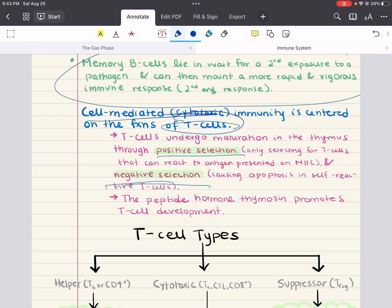Negative selection refers to causing apoptosis in cells that are self-reactive, meaning they're activated by proteins produced by the organism itself. The maturation of T cells is facilitated by thymosin, a peptide hormone secreted by thymic cells. Once T cells leave the thymus, they are mature but naive. Upon exposure to antigen, T cells undergo clonal selection so that only those with the highest affinity for a given antigen will proliferate. The peptide hormone thymosin promotes T cell development.